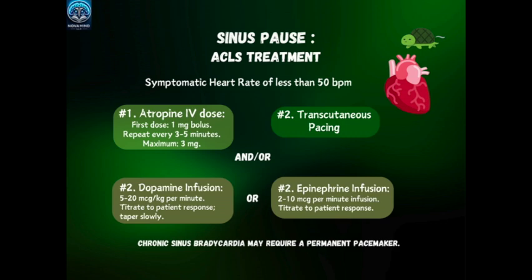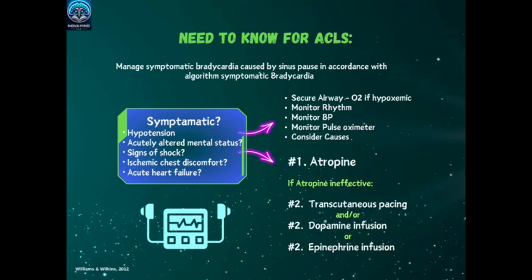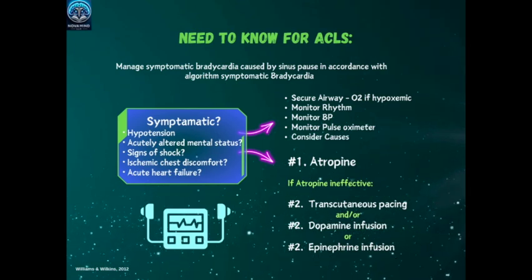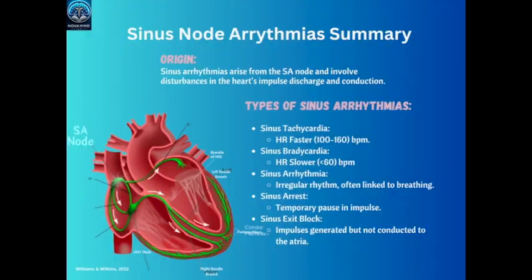Key takeaways for ACLS: identify whether the pause returns on time — sinus exit block — or does not return on time — sinus arrest. In symptomatic cases of bradycardia, initiate ACLS protocols with atropine as your first-line medication. Consider pacing if atropine fails or if the rhythm results in instability. For more detailed sinus node arrhythmias or more practice strips, become a member at www.novamindllc.com or through our YouTube channel to gain access to dozens of practice strips to master rhythm strip analysis.